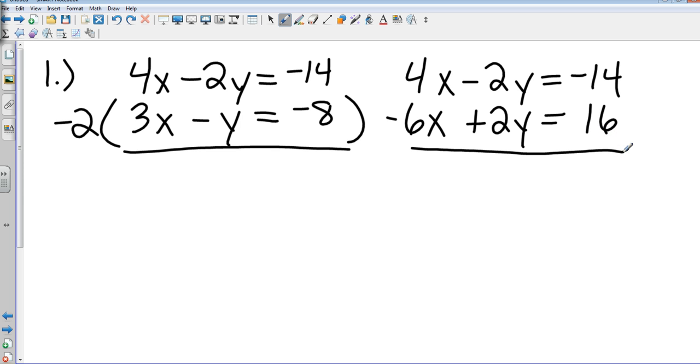So that gives me a negative 6x, a positive 2y, and a positive 16. How many got to that stage? All right, most of you. Okay, now what happens to the 2y's? They cancel. What is 4x minus 6x? Negative 2x. And negative 14 plus 16? Two. One step to go. What do I do? Divide by negative 2. And what does x equal? Negative 1. How many had x equals negative 1? Good, that's a pretty good number.